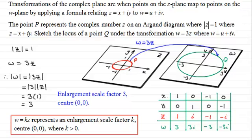This happens all the way round. As z moves round this circle, starting from here, w moves round this circle and ends back up here.